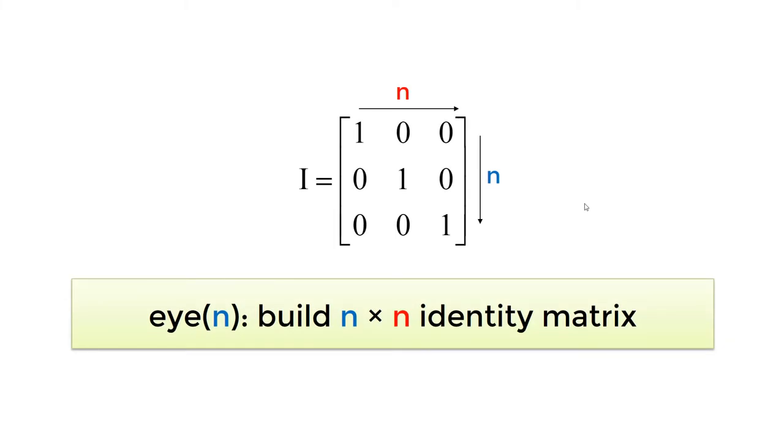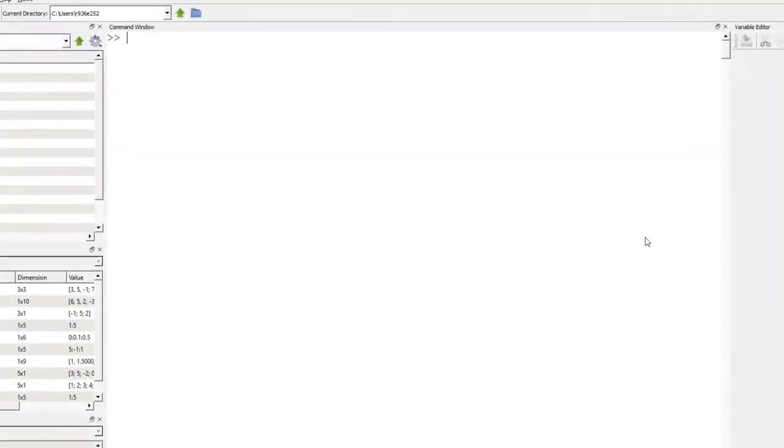There are a few useful built-in functions to create common matrices. First, the identity matrix is a matrix having element of 1 in the diagonal position and 0 elements in the remaining. For the n by n identity matrix, you can use eye function. For 3 by 3 identity matrix I, you can type I equals sign followed by eye 3.